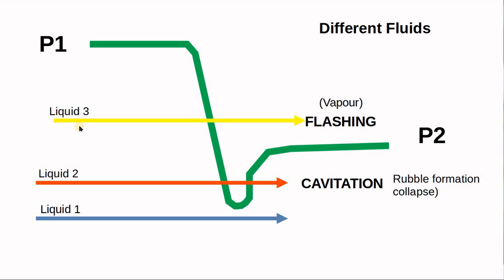Now the third scenario: the vapor pressure is higher than the exit pressure P2. This means vapor forms inside the valve and will never collapse back — it exits as vapor. This is called flashing.